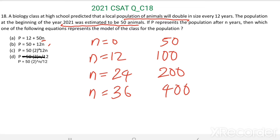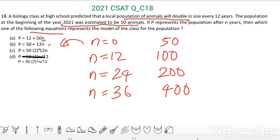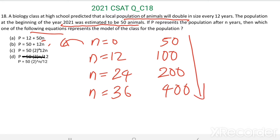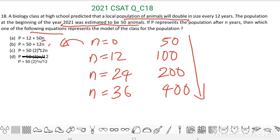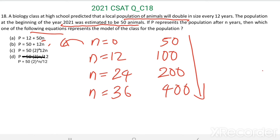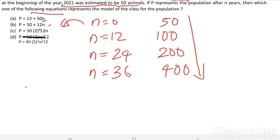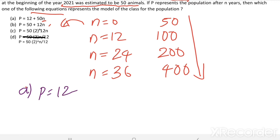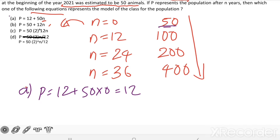To find the equation, put the value of n in each equation — whichever satisfies these values will be our answer. Looking at the first option: when n equals 0, p equals 12 plus 50 times 0, which equals 12. But the initial population should be 50, so we can eliminate the first option — we only got 12.